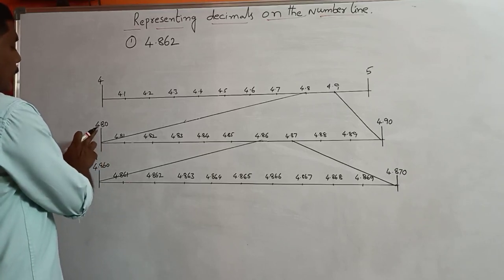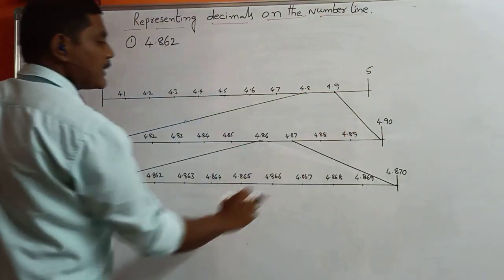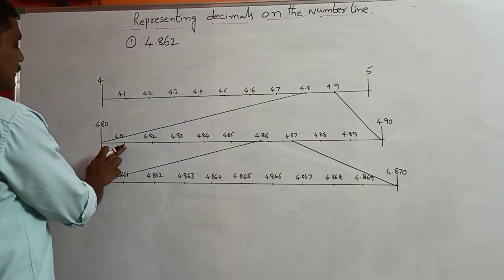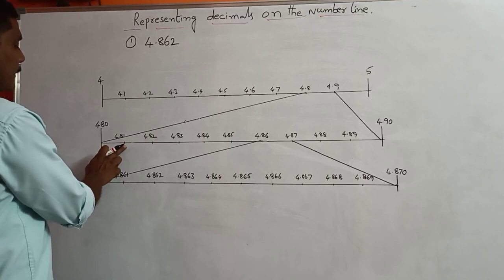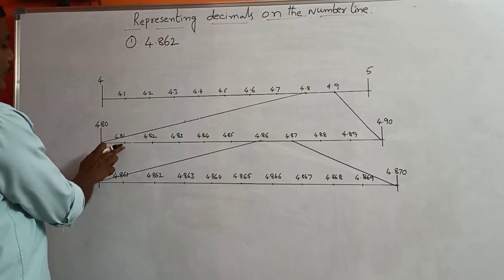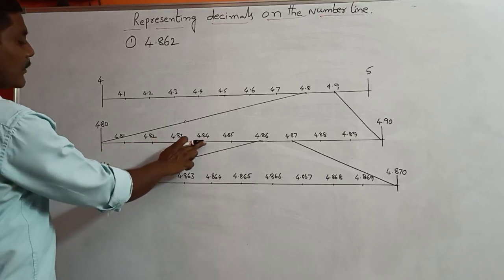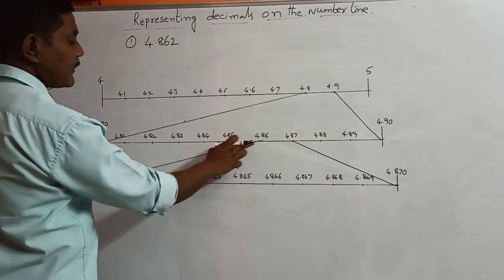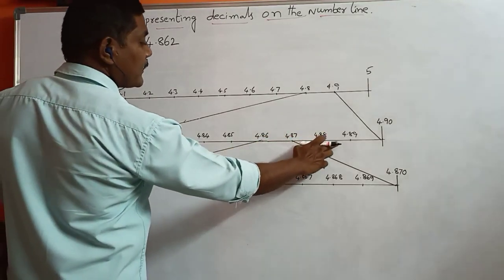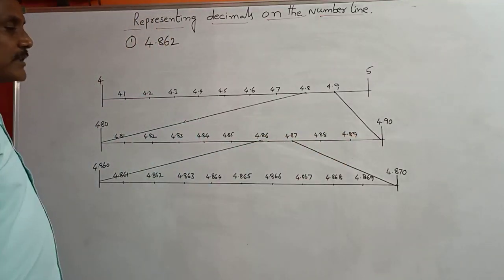From 4.8 to 4.9, we divide this part into 10 equal parts. Then the first part equals 4.80, then 4.81, 4.82, 4.83, 4.84, 4.85, 4.86, 4.87, 4.88, 4.89, then 4.90.